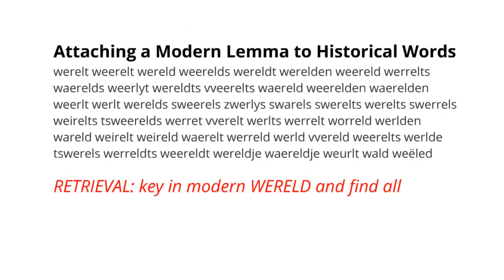In the lexicon used for retrieval, for the purpose of better word lookup, each historical word form has a modern lemma attached. This lemma, in combination with part of speech, is the key under which variants are grouped. The lemma is not a version of the historical word form in modern spelling, but an uninflected modern form corresponding to the historical word form, as one would find in a traditional dictionary entry. Key for this task is that these modern lemmas are written according to the current orthographical rules of your language.